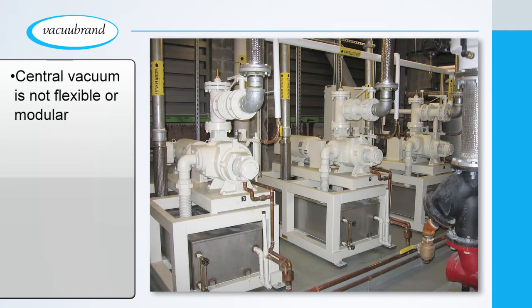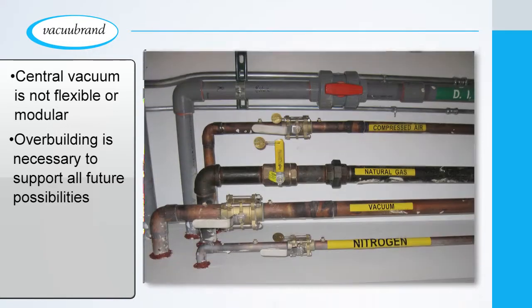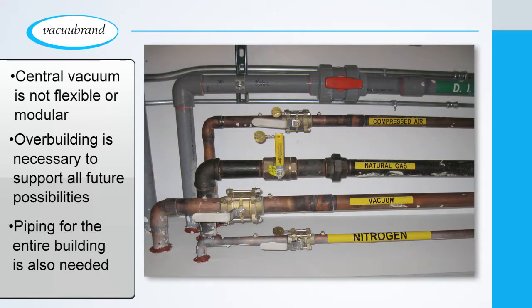Central vacuum is neither flexible nor modular. In today's multidisciplinary science buildings, the needs of each lab change over time. The only way to get flexibility from a central vacuum system is by over-building. You have to size the pumps and pipes to support all possible future users, and then run those expensive copper pipes throughout the entire building.